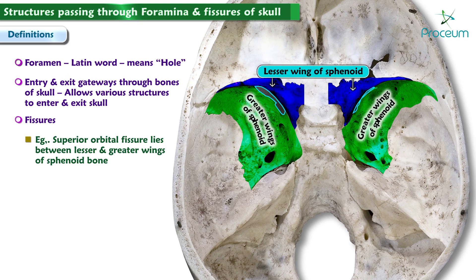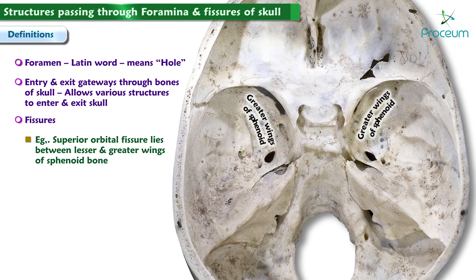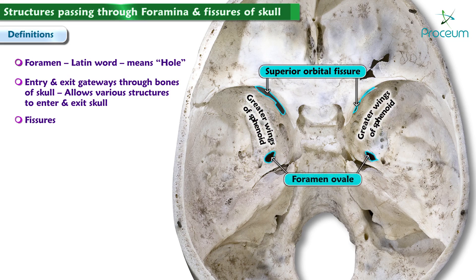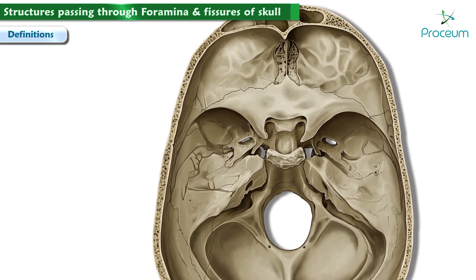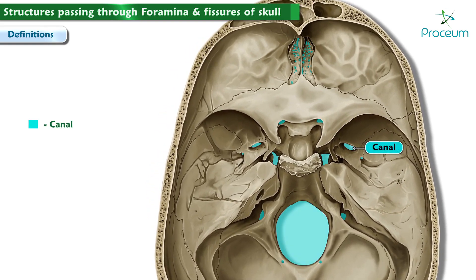To identify the difference between a foramen and a fissure, you have to take a look at the shape of the foramen ovale and compare it with the superior orbital fissure. The foramen ovale is smaller and round in shape, whereas the superior orbital fissure is quite long and narrow in comparison. Also considered to be types of holes in the skull are structures with canal, hiatus, or meatus in their name.